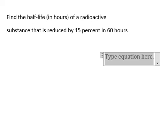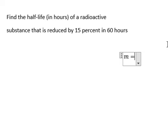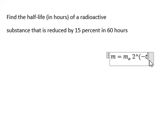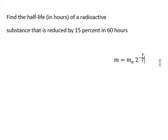We have the formula: m equals m-zero — that is the initial mass — multiplied by 2 to the power of t over T, where small t is the time and capital T is the half life. We know the substance is reduced by 15 percent in 60 hours.